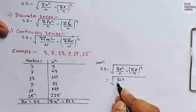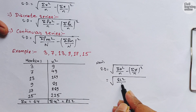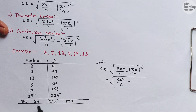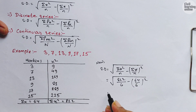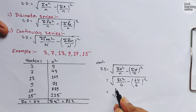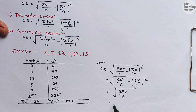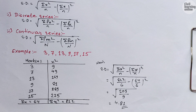Substituting the values: Σx² = 822, n = 6 (since there are 6 terms), and Σx = 64. So SD = √(822/6 − (64/6)²). On solving this we get √(209/9), which gives the standard deviation as 4.81. This is our answer.